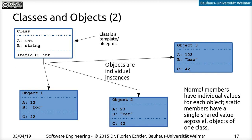Let's try to visualize this. Here we have the class, which is a template — you could also call it a blueprint — which tells you that it has a variable 'a' which holds an integer, a variable 'b' which holds a string, and also a static variable 'c' which is again an integer, which I'll come to in a moment. From that class we can derive as many objects as we want — in this case three — and for each object we have individual values for 'a' and 'b'.